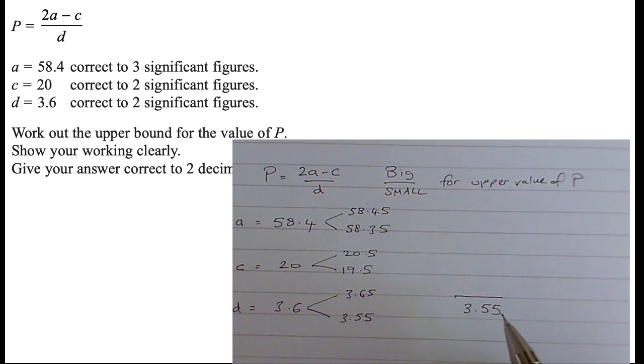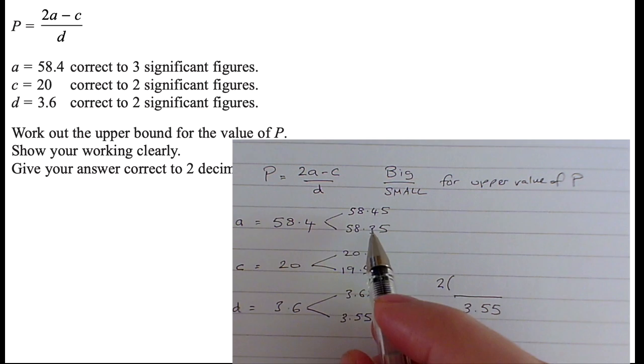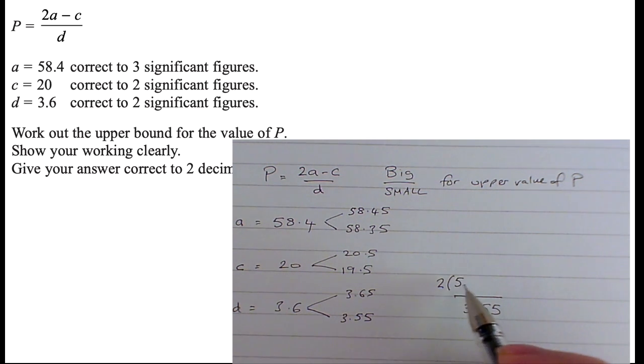Now the slightly trickier part is the big number on the numerator. Well, I want to make that as big as possible. So I don't want to do small take away big or big take away small. I want to do big take away small, don't I? I want to make A as large as I possibly can, and that's 58.45. And take away C as small as I can make it. Take away as little as possible, that means it keeps it as big as possible. 19.5.